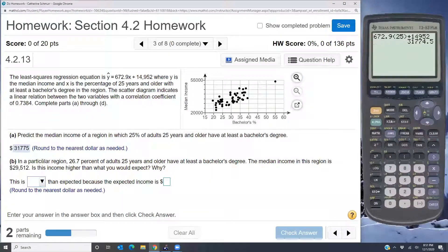Okay, so now they say in a particular region 26.7 percent of adults 25 years and older have at least a bachelor's degree. The median income in this region is 29,512. Is this income higher than you would expect?